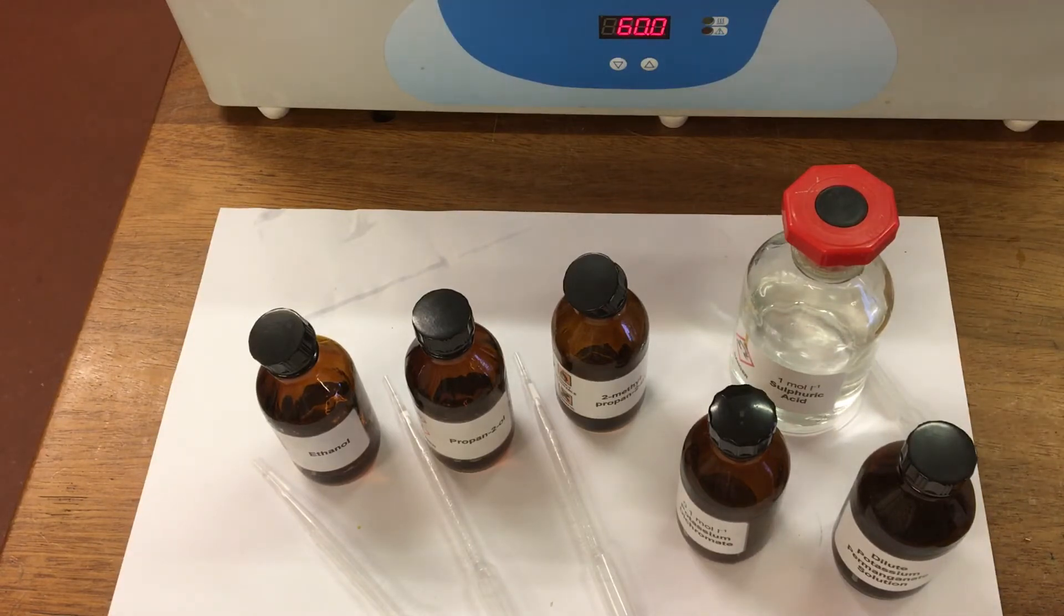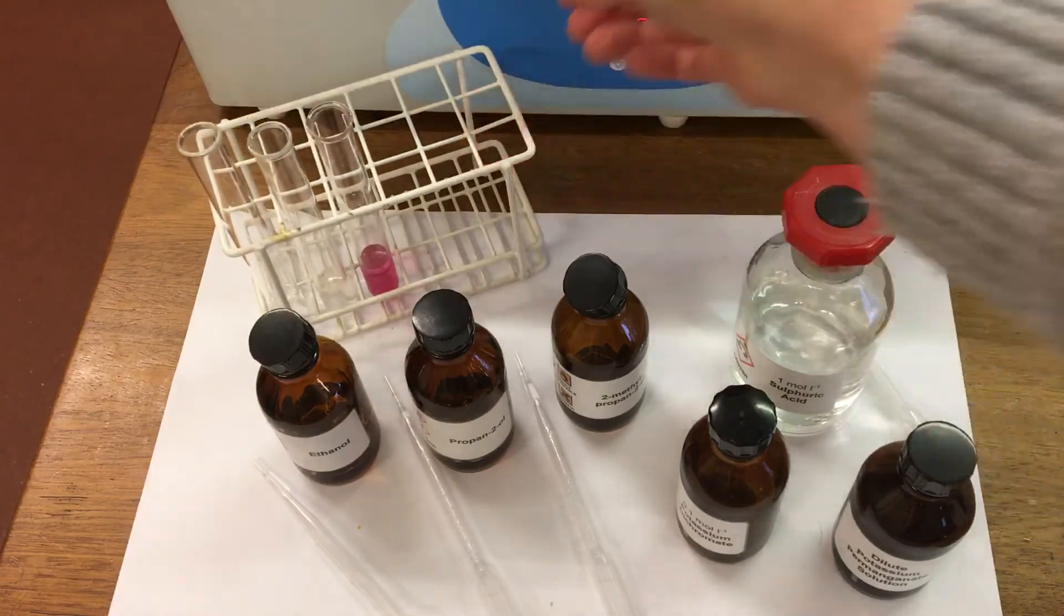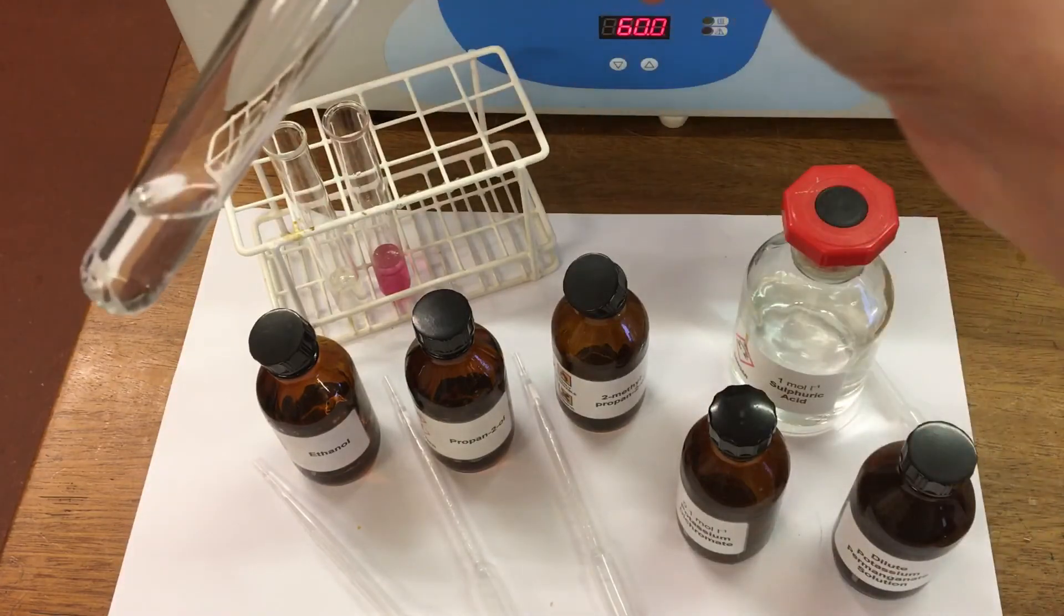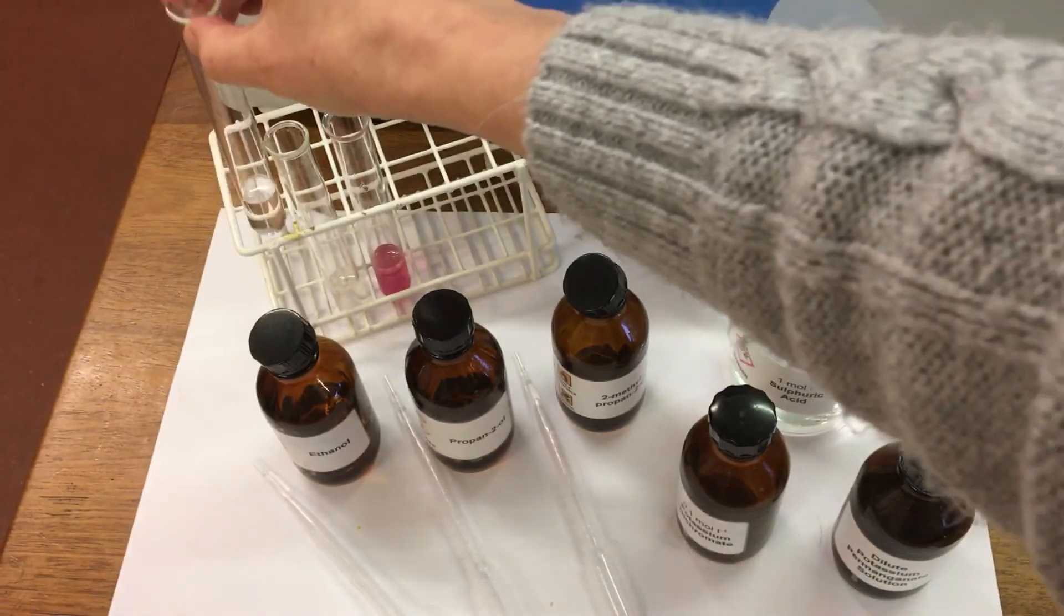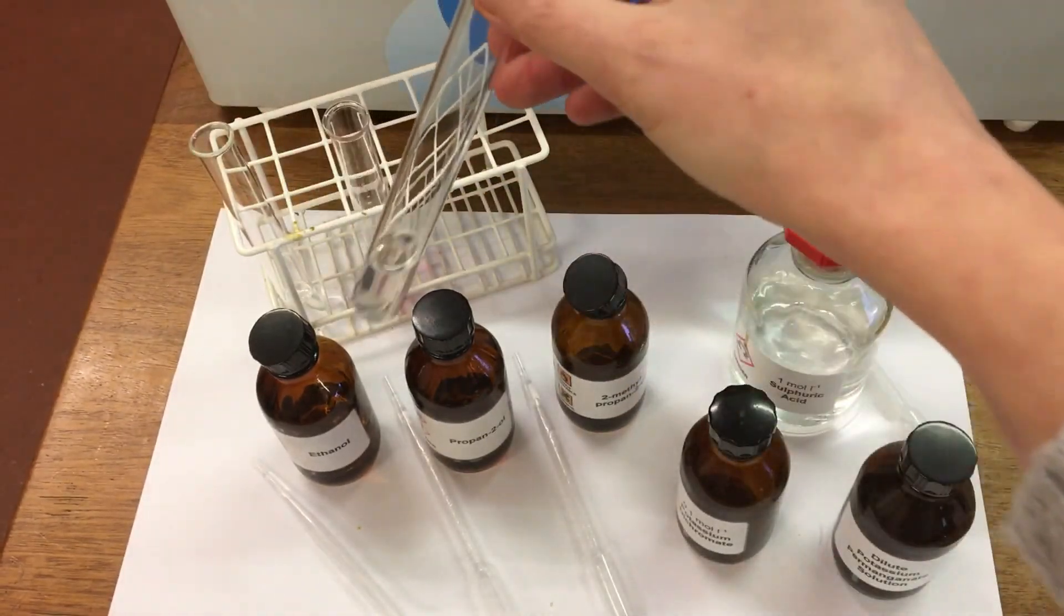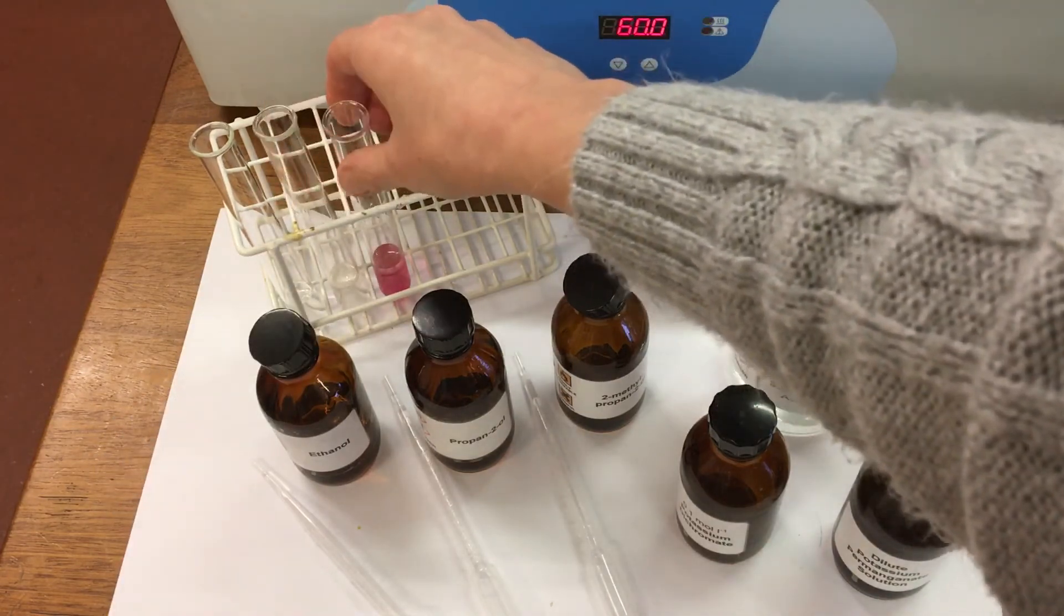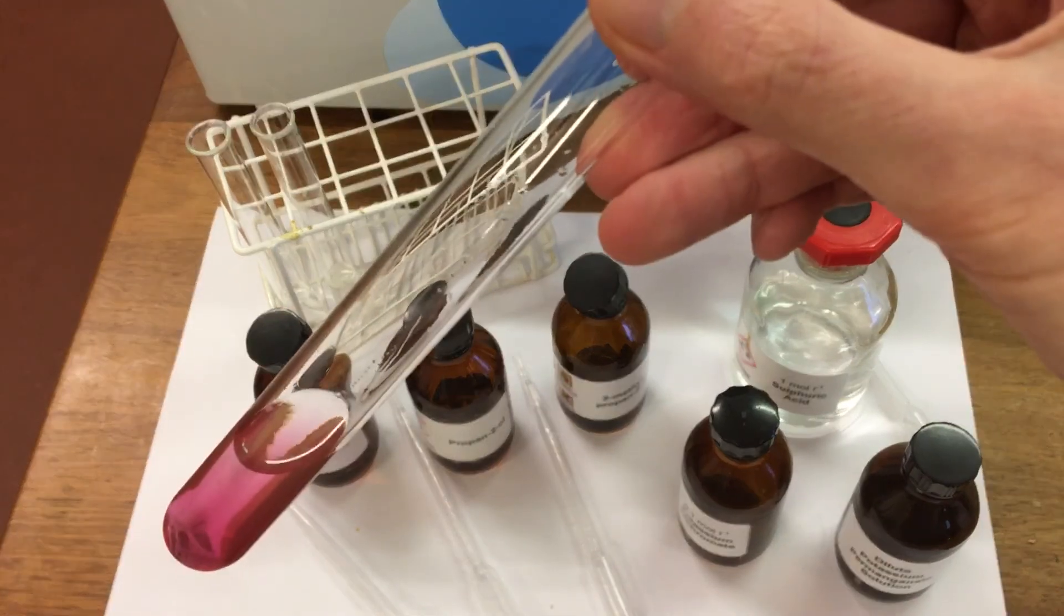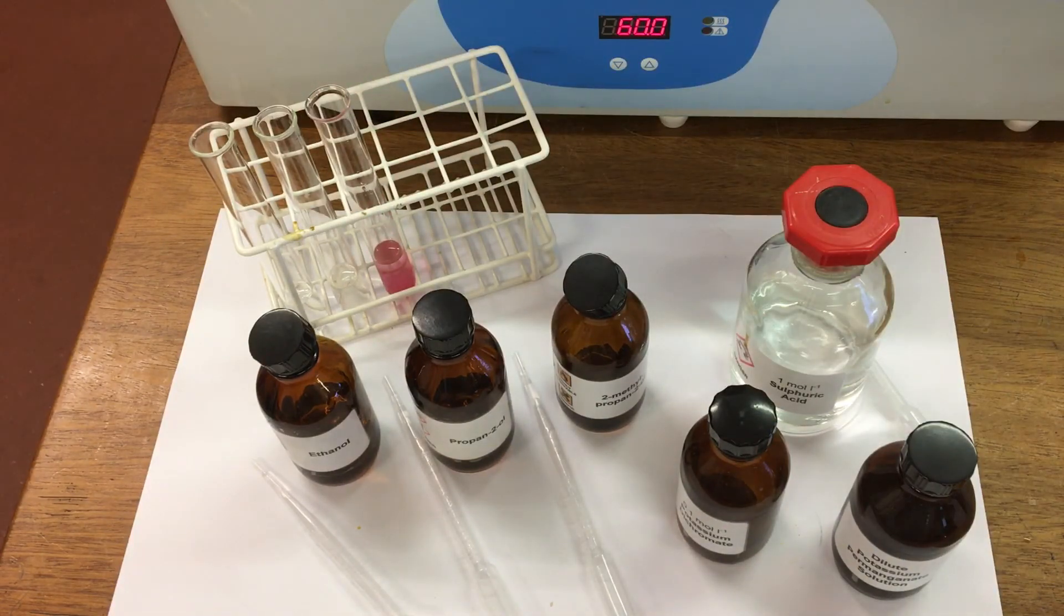So after a couple of minutes, we'll look at the results. So for this one, we've got our ethanol - it's gone completely colorless, so that one's oxidized. Propan-2-ol also has gone colorless. But our 2-methylpropan-2-ol, we've still got the purple color of the permanganate. And then we're going to just get some light and then put them on display.